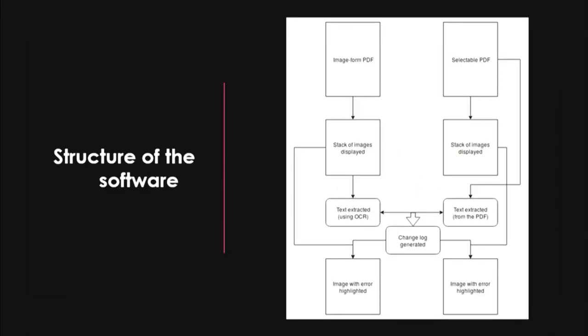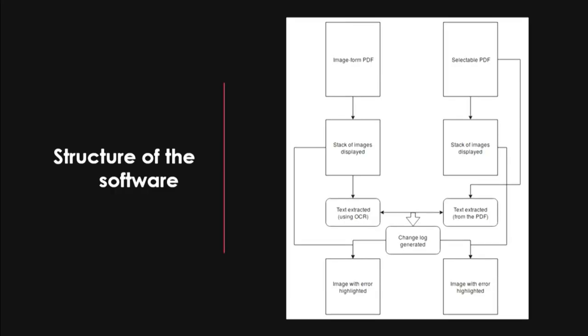The structure of the software: we'll have an image-form PDF and a selectable-form PDF. We'll extract images from them, display them, and extract text from them. The text extracted from the image stack will use the OCR tool, and the text extracted from the selectable PDF will come directly from the PDF object. After that, we'll compare the text, generate an error log, and highlight the differences.